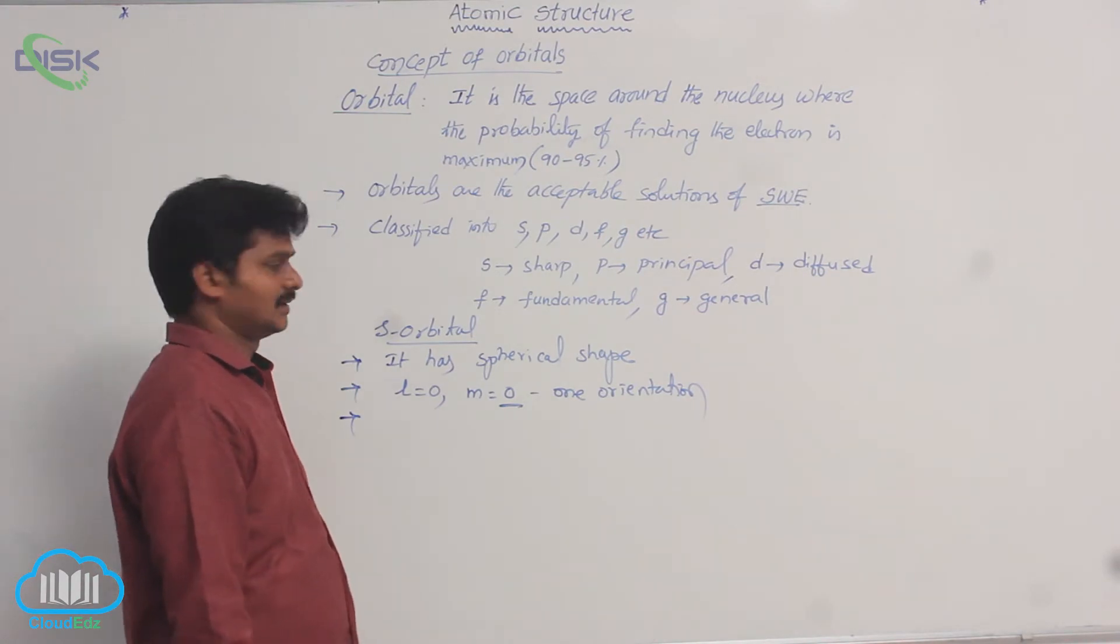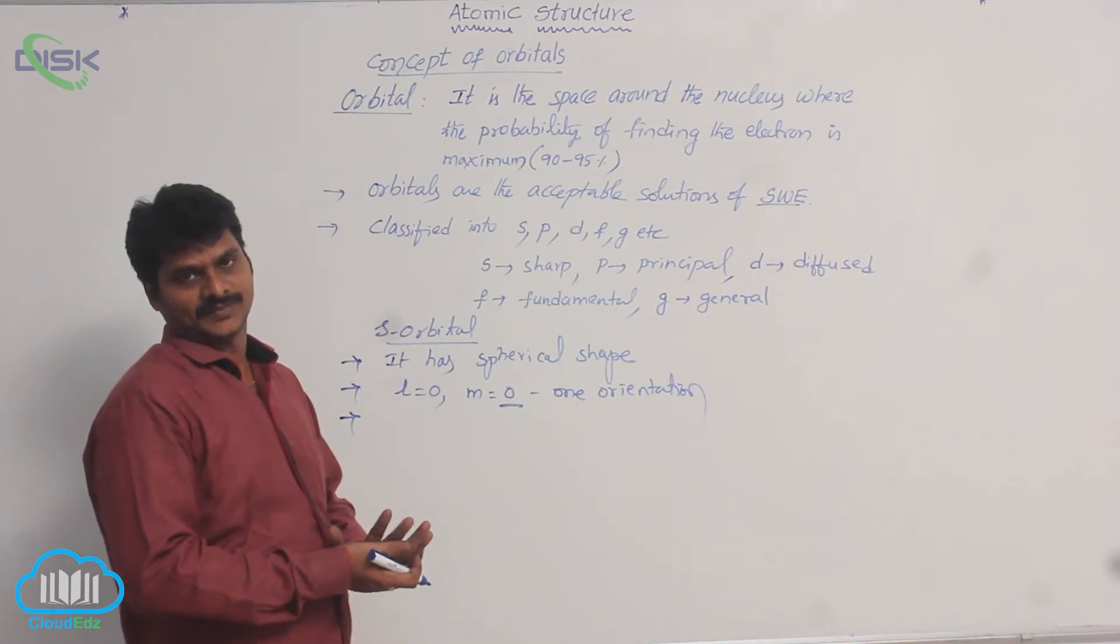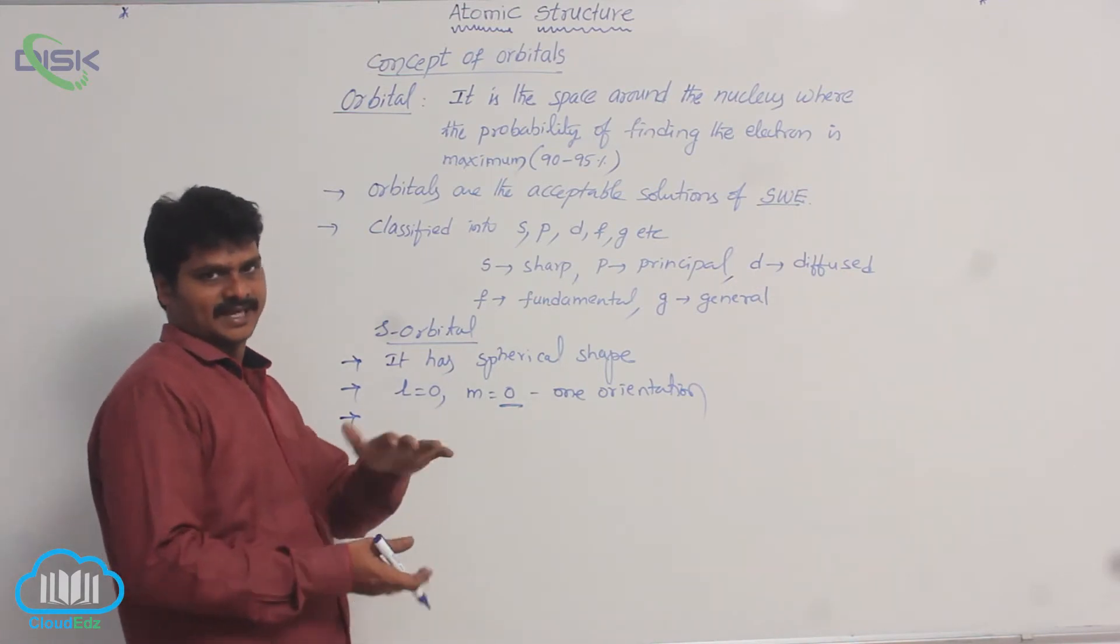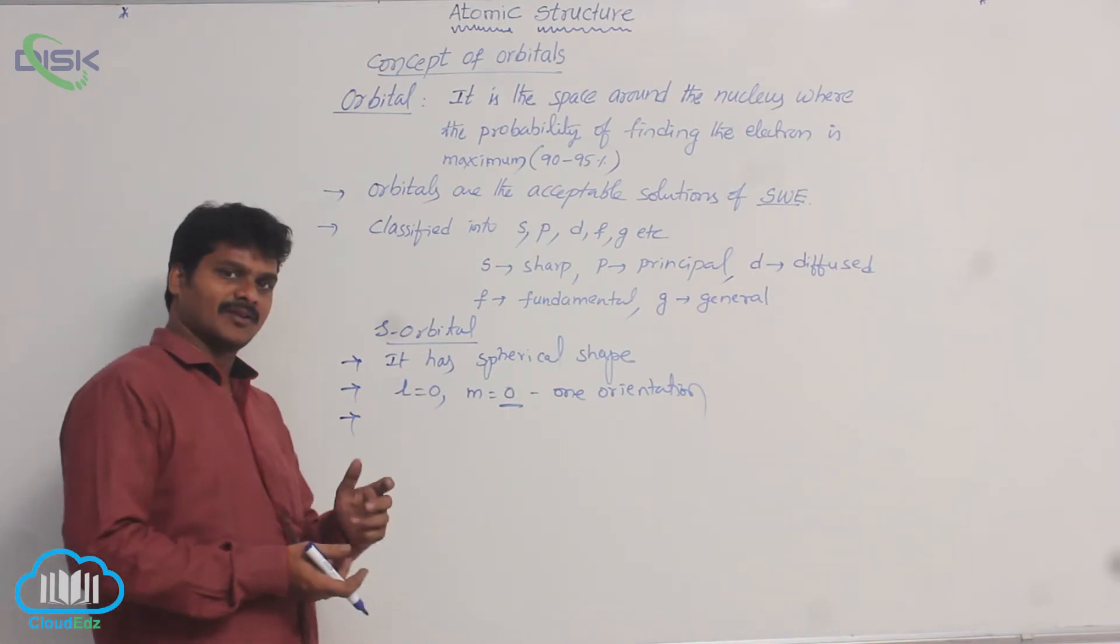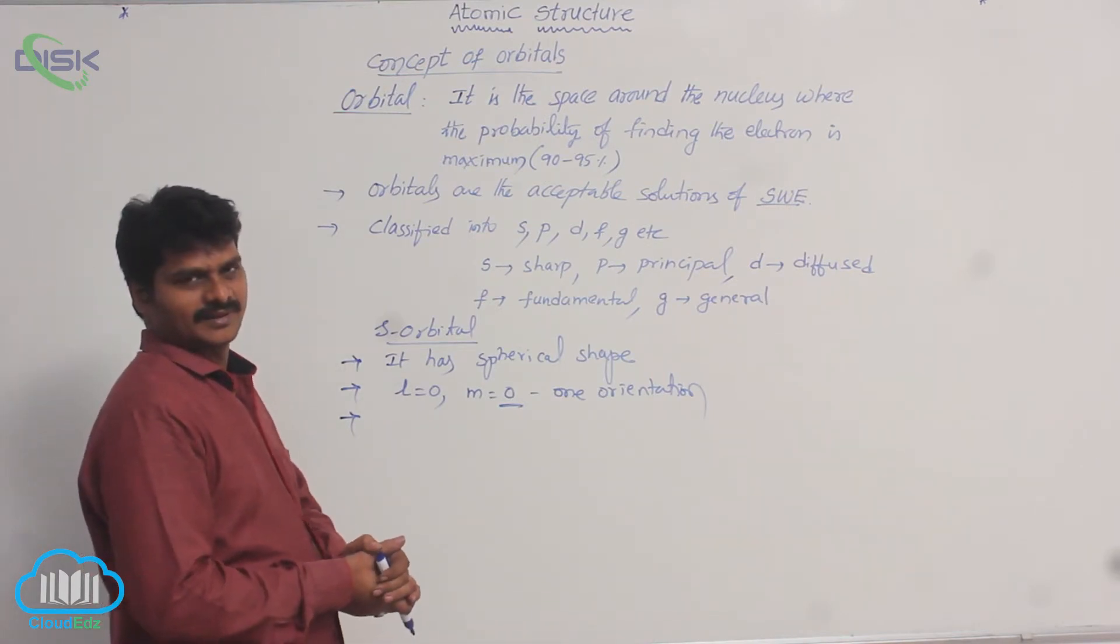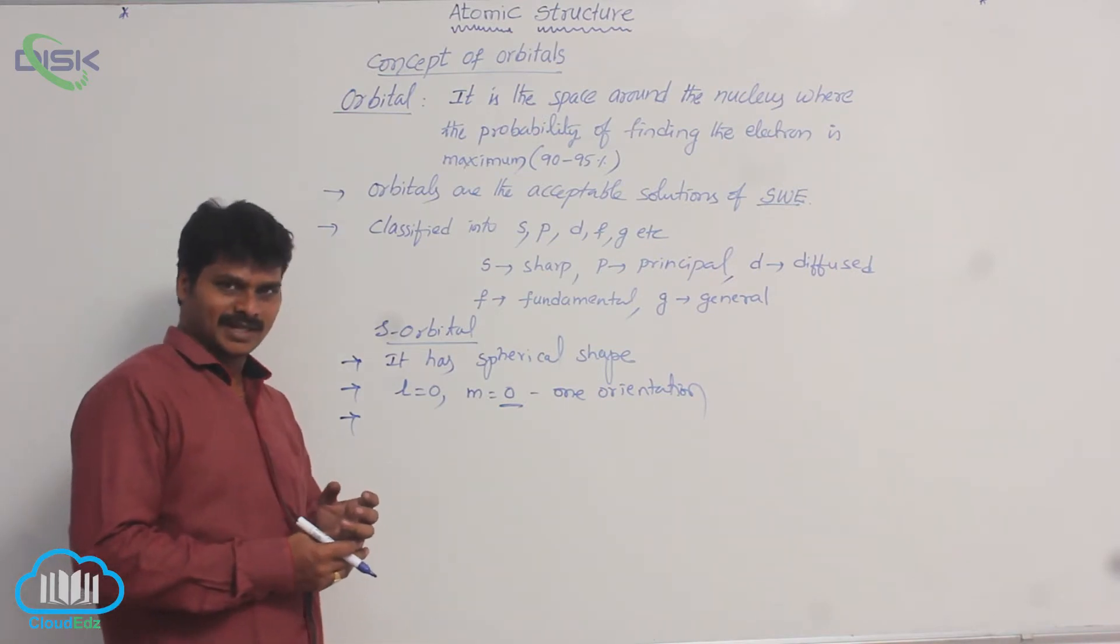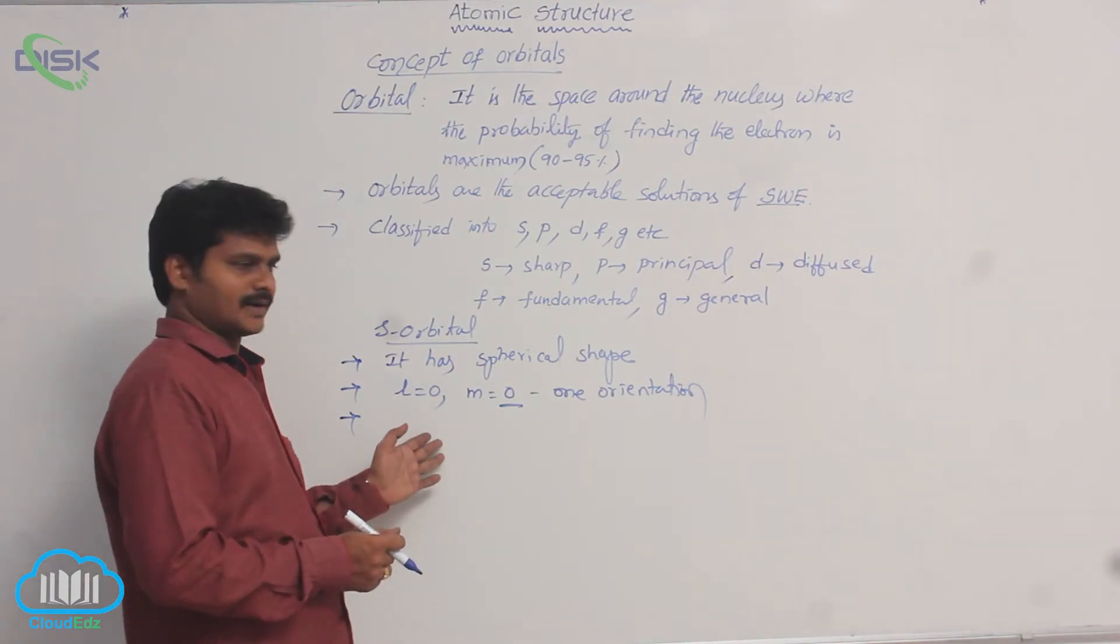Similarly, you know, S orbital with respect to x, y, z axis orientation is same. That's why only one orientation with respect to x, y and z. For S orbital, the wave function is a function of distance from the nucleus only. So wave function of S orbital depends on distance from the nucleus only.